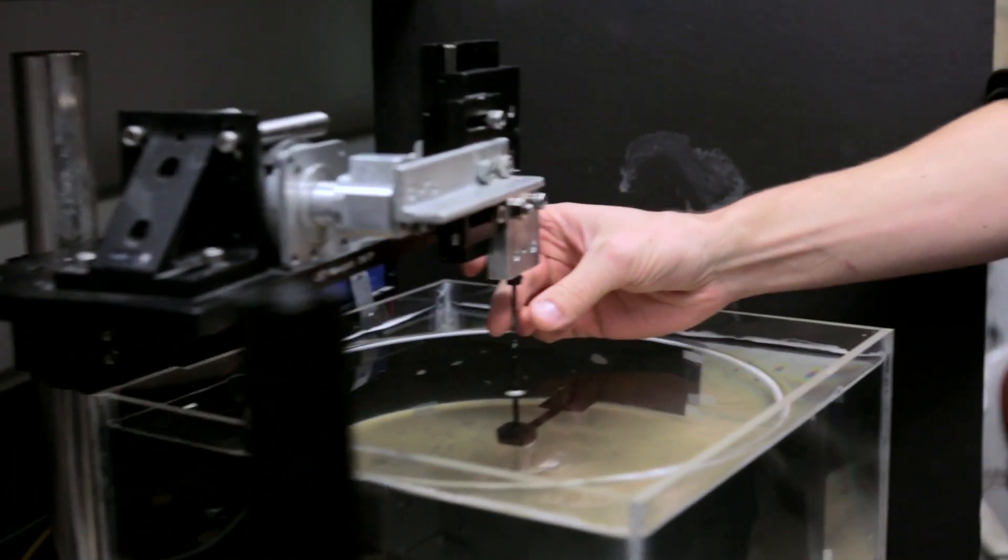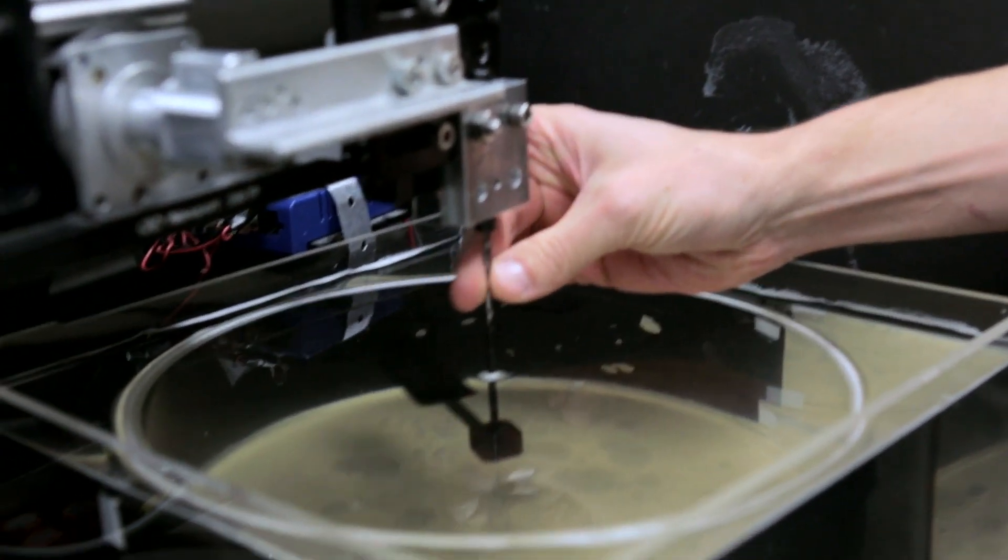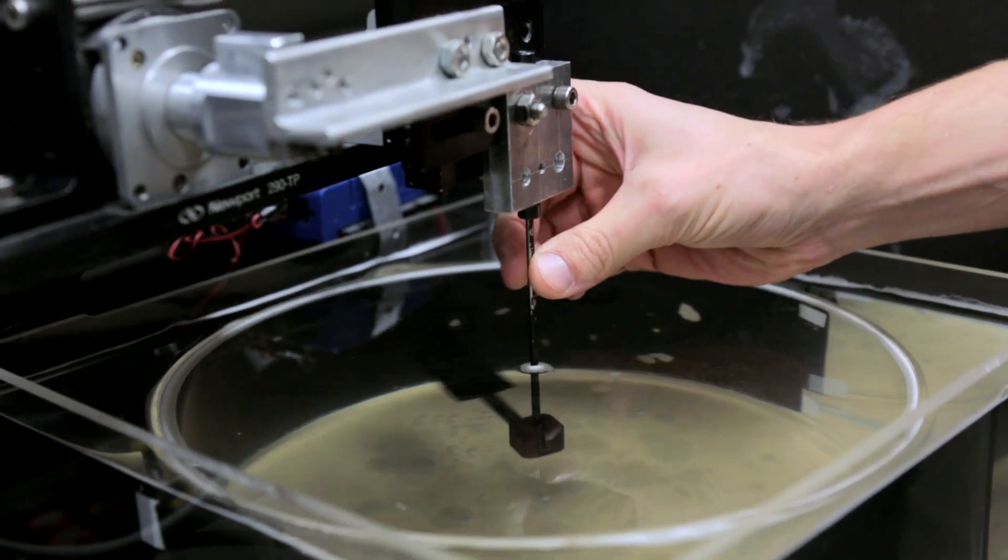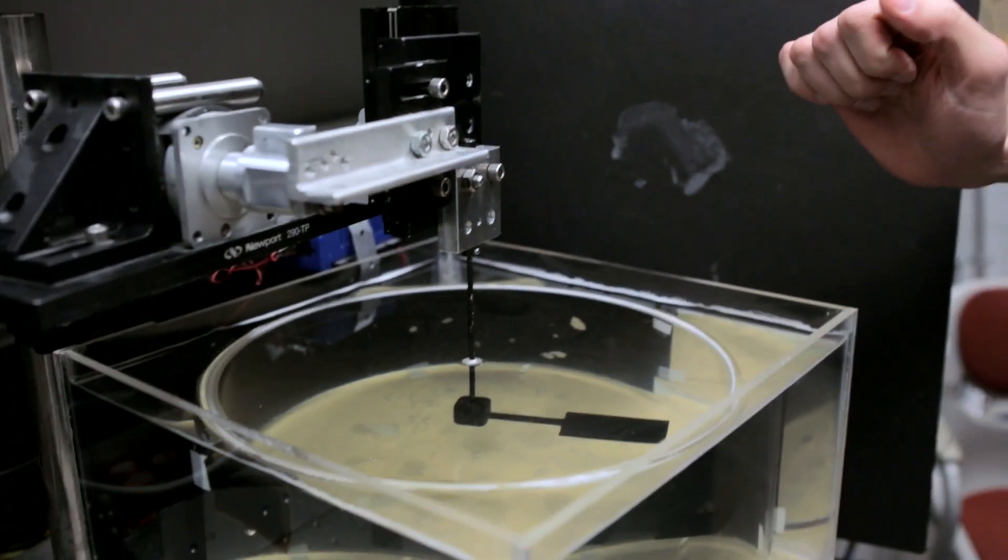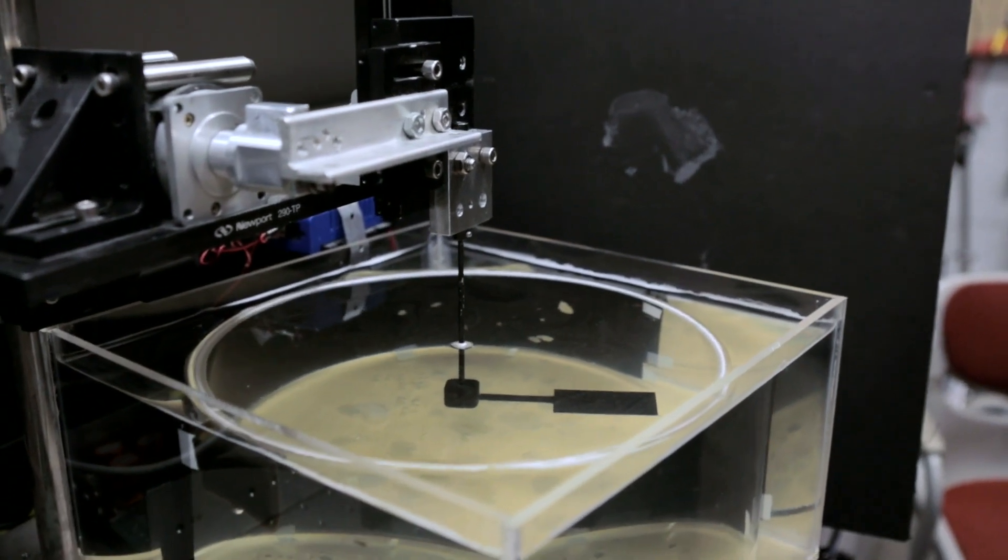This gadget here is meant to basically simulate bird flight. What it is is a wing that is free to rotate. Once I flap this, the fluid forces will allow the wing to go to whatever speed it chooses to go at.